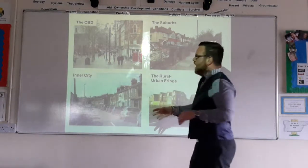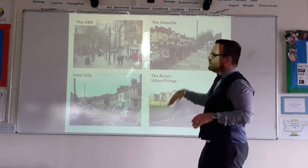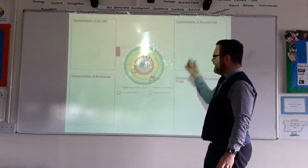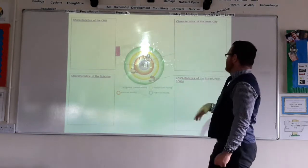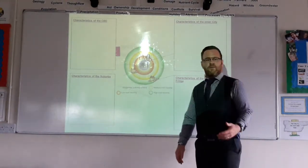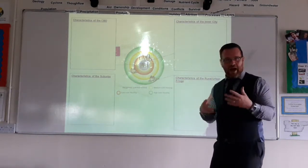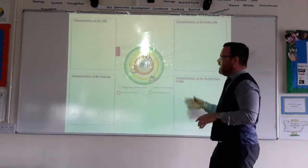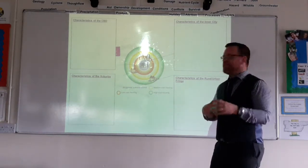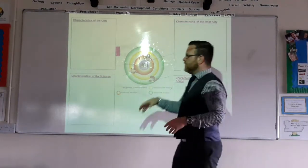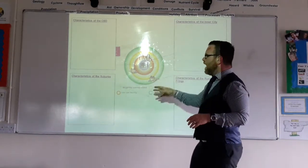Your land value is highest in the CBD and then it steadily decreases as you move outwards. The rural-urban fringe has a lot more open space, but also the highest quality and highest priced housing — because obviously it is on the rural-urban fringe, you've got access to the CBD but you've also got a lot of open space. People perceive it as being safer sometimes than the suburbs or inner city areas.